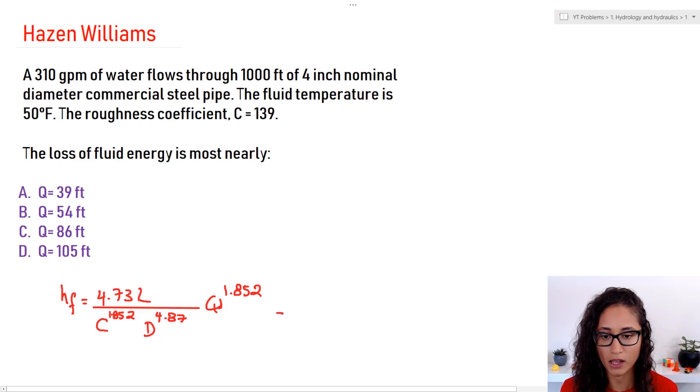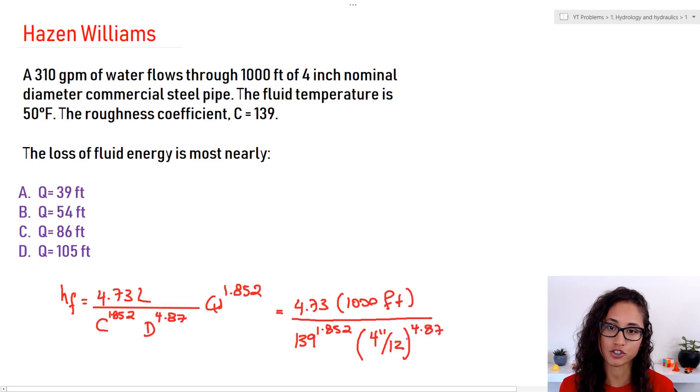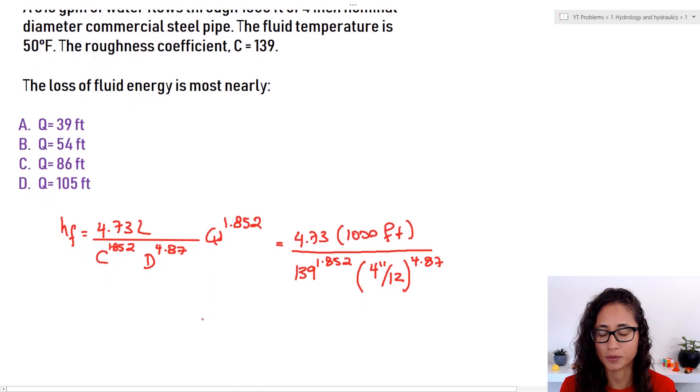Okay guys. So L is 1000 feet. C is 139. And then D we said we have to convert it, right? So we just do four inches and we divide it by 12. And this is to the power of 4.87. And then there's Q. Well, Q we got to convert it to cubic feet per second. So we have Q. Let's do it separately. I like to do that. So Q is equal to 310 gallons per minute.